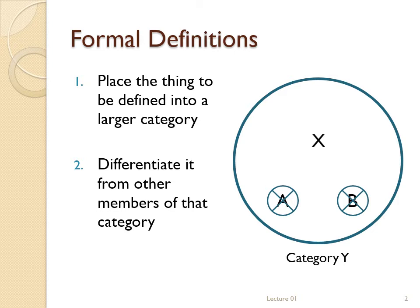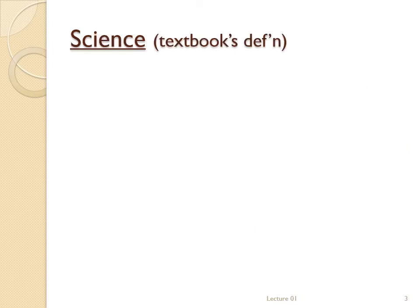To understand physical anthropology, we must first know what category it belongs to and how it differs from other members of that category. What I'll do is start by defining very large categories of ideas, then subdivide them into smaller and more specific ideas until we work our way down to physical anthropology. The largest category I'll start with is science.